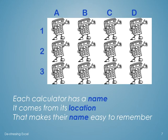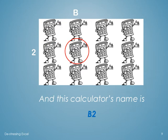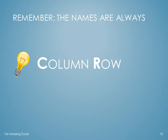All of these calculators sitting side by side have a name, and the name comes from their location, which makes their name easy to remember. For instance, this calculator's name is A1, and this one's name is B2. Remember, the names are always column, row — not the opposite.